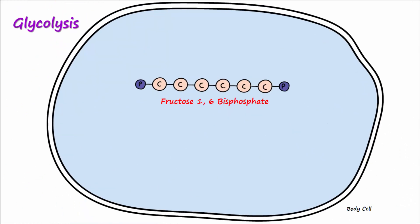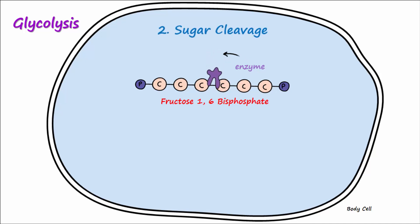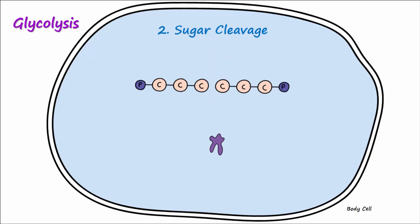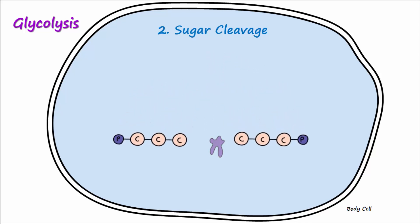The fructose 1,6-bisphosphate is then cleaved by an enzyme in the second step of glycolysis, which is sugar cleavage. This splits fructose 1,6-bisphosphate into two new molecules known as glyceraldehyde-3-phosphate.